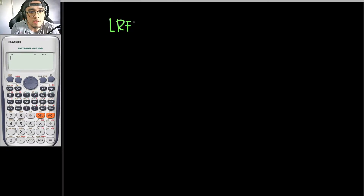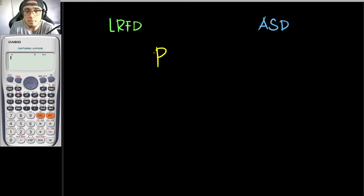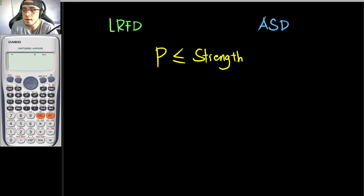As per the design philosophy stated in the National Structural Code of the Philippines — both LRFD and ASD — it is stated that the load P being carried by your structural member should be less than or equal to the strength of the member itself. This is self-explanatory: you want your member to have a strength greater than the load it is carrying.